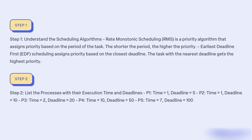Step 2: List the processes with their execution time and deadlines. P1: time = 1, deadline = 5. P2: time = 1, deadline = 10. P3: time = 2, deadline = 20. P4: time = 10, deadline = 50. P5: time = 7, deadline = 100.